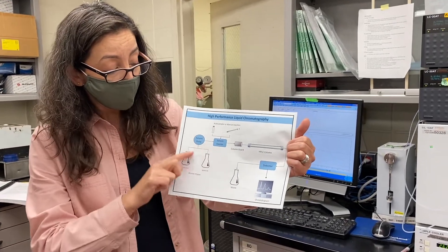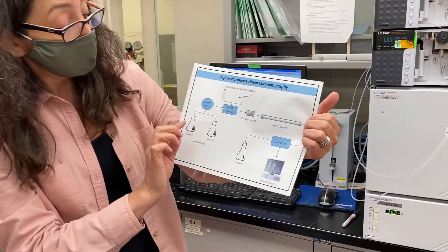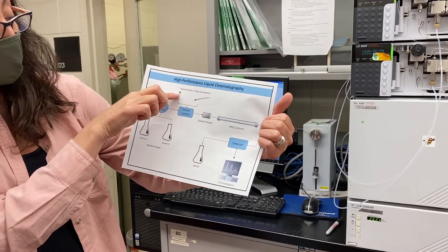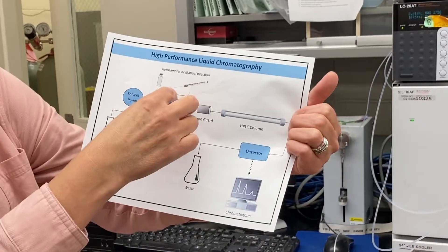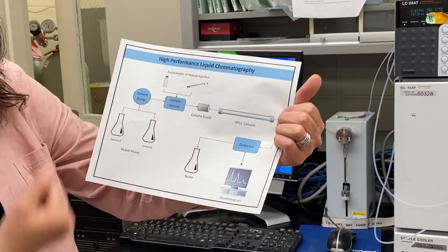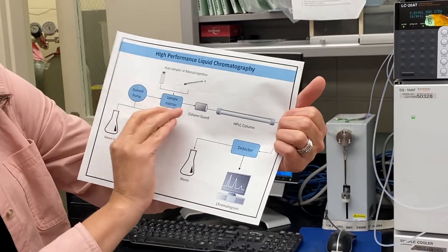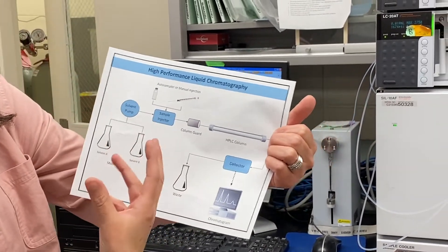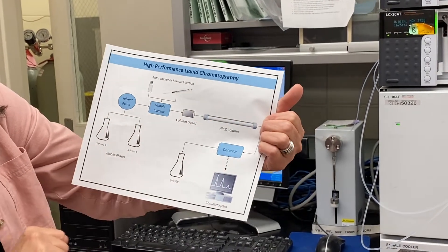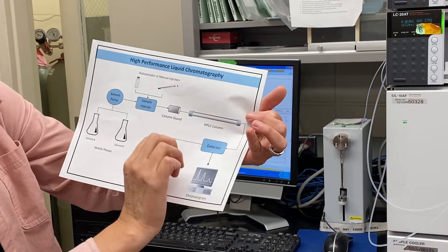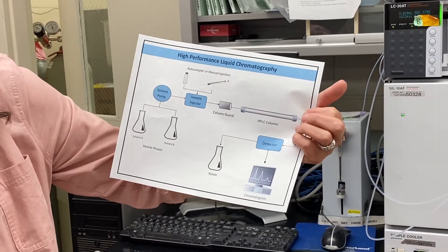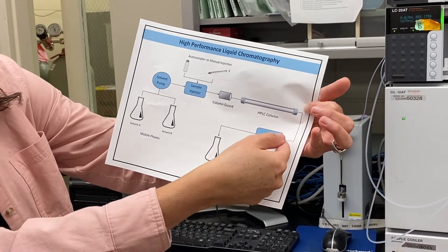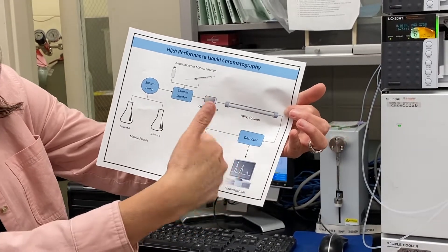The pump is going to pump the solvents into the system. The first compartment is the sample injection — that's where we have our sample prepared, and we will inject it either manually or using the auto injector. Then it goes from the injector to the guard column, and then to the HPLC column. From there, your sample goes through the column and separates based on its affinity to the stationary phase, leaving the column one component at a time — hopefully, if we achieve separation — and then goes to the detector to get detected.